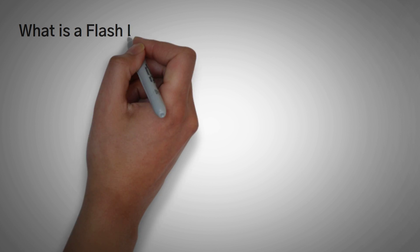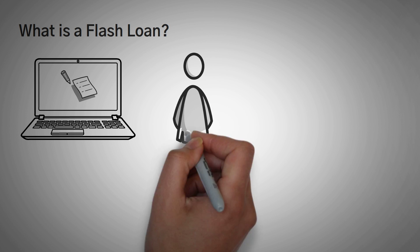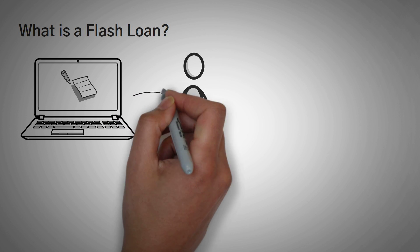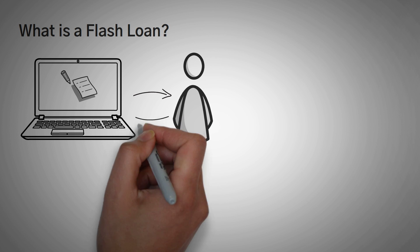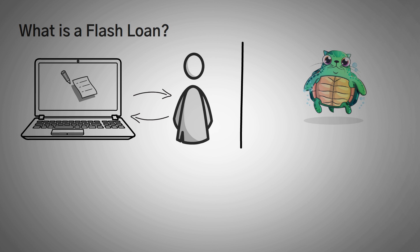What is a flash loan? A flash loan is simply a smart contract that creates a loan in cryptocurrency where you can borrow millions of dollars with absolutely no collateral. The catch is you must pay the flash loan back in the same transaction that you took it out with.